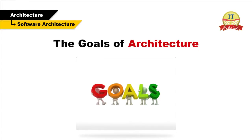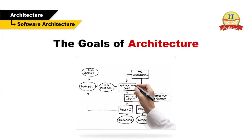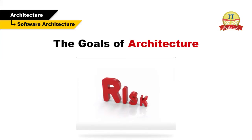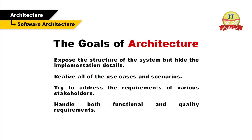The goals of architecture: The goal of architecture is to identify the requirements that affect the structure of the application. Good architecture reduces the business risks associated with building a technical solution. Architecture should expose the structure of the system but hide the implementation details. Realize all of the use cases and scenarios. Try to address the requirements of various stakeholders. Handle both functional and quality requirements.